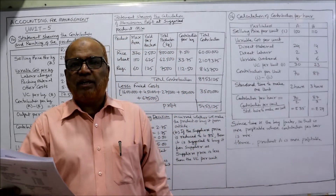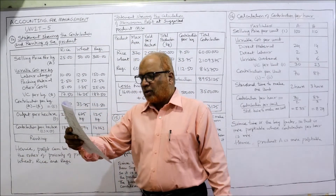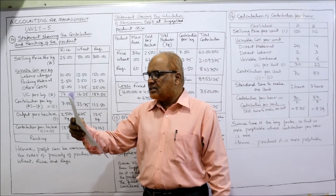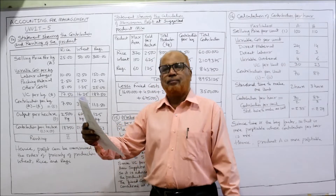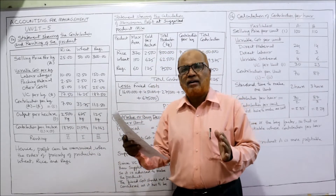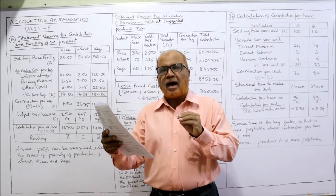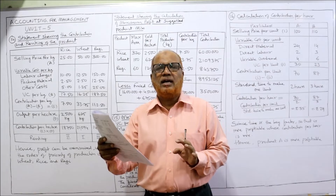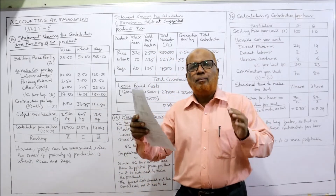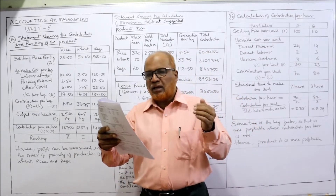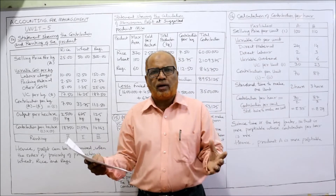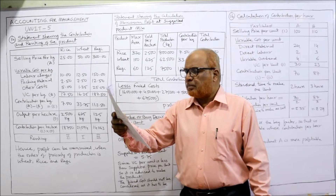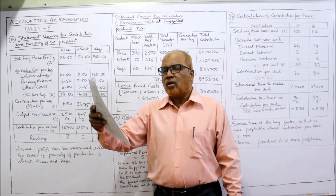Now see the 14th problem. SM Agro Limited has 500 hectares of land on which it grows rice, wheat, and ragi either jointly or individually. Here the limiting factor is the land only. SM Agro Limited has a maximum land of 500 hectares. On this land the company wants to grow either rice, wheat, or ragi either jointly or individually.